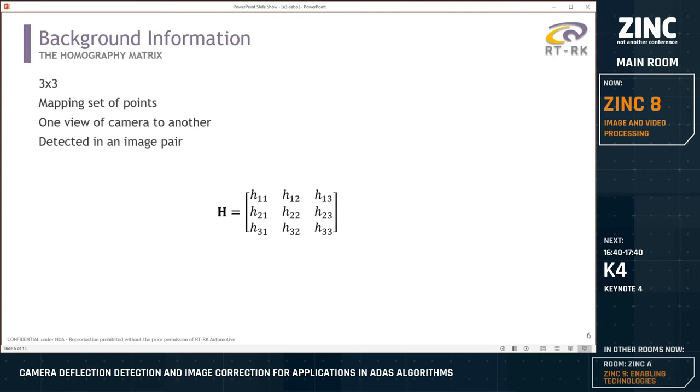The homography matrix is a 3x3 matrix that describes the mapping of a set of points lying on the plane of a scene from one view of camera to another. Homography matrix can be calculated in various ways, and I used a calculation method with image pairs and a set of equations.